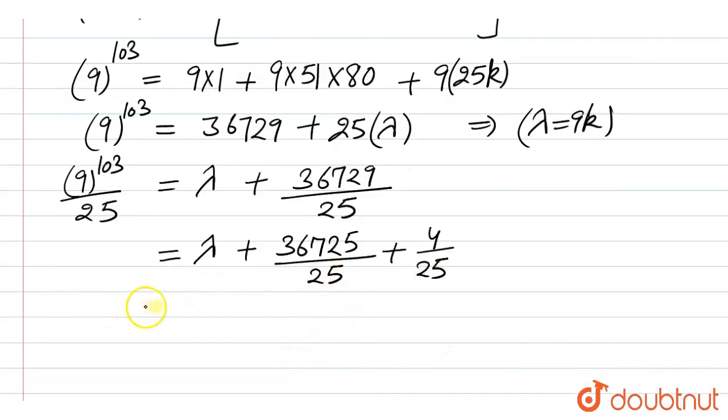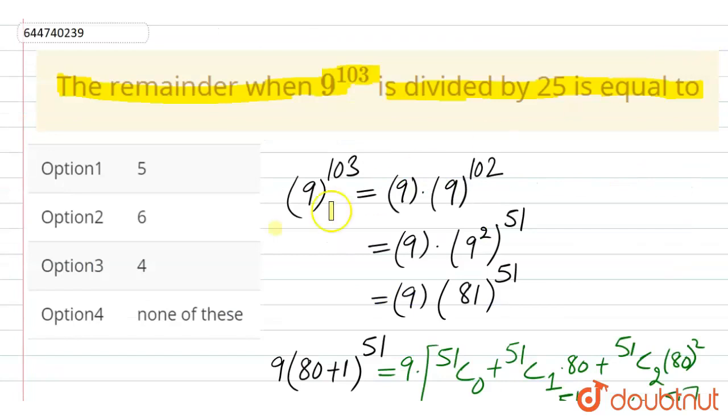So we can write this as λ plus this number is divisible, and if we will divide we will get 1469. So we can write 9 to the power 103 as 25 times this number plus 4. So clearly we can see the remainder left is equal to 4, and we can see the options. So correct option is option number 3.